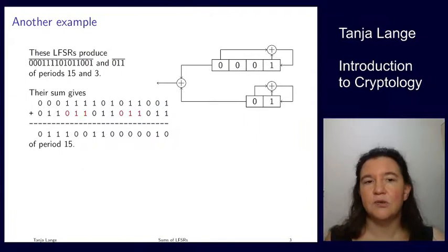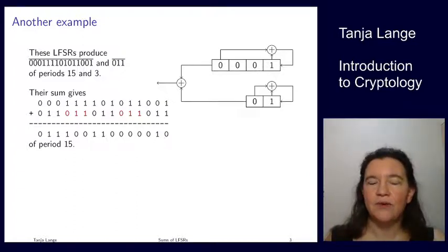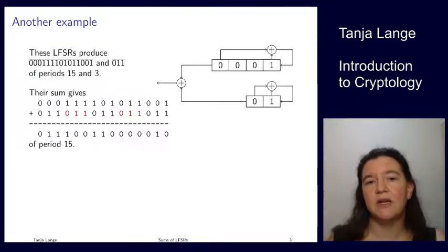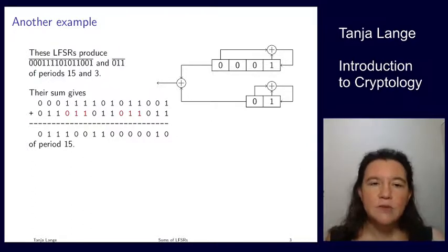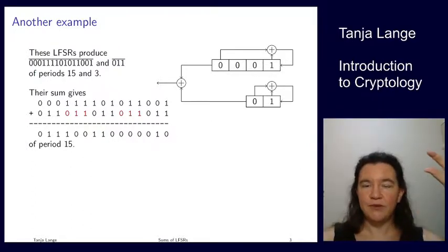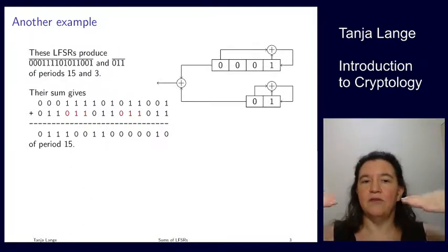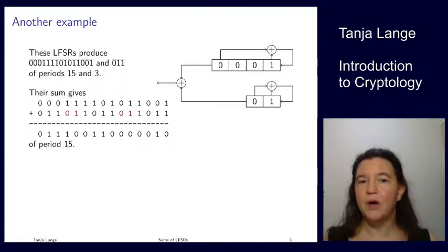Here's another example. This is using the LFSR of that period 15, so this is the x to the 4 plus x to the 3 plus 1. And again, adding up the x squared plus x plus 1 LFSR, and then taking the sum. And now in this case, we observe that 3 fits into 15 exactly. So here we have just the top one, 15 steps, then 5 repetitions of the bottom one, and we have 1 period 15.